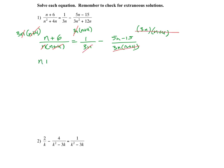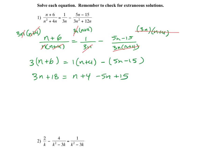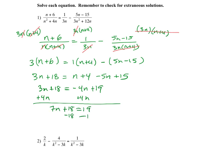So that means I have (n plus 6) times 3 equals 1 times (n plus 4) minus 5n minus 15. Now I'm going to solve this equation. I'm going to simplify on the right side: negative 4n plus 19. Then I'm going to add 4n on both sides. So 7n plus 18 equals 19. Now subtracting 18: 7n equals 1, so n equals 1 over 7.